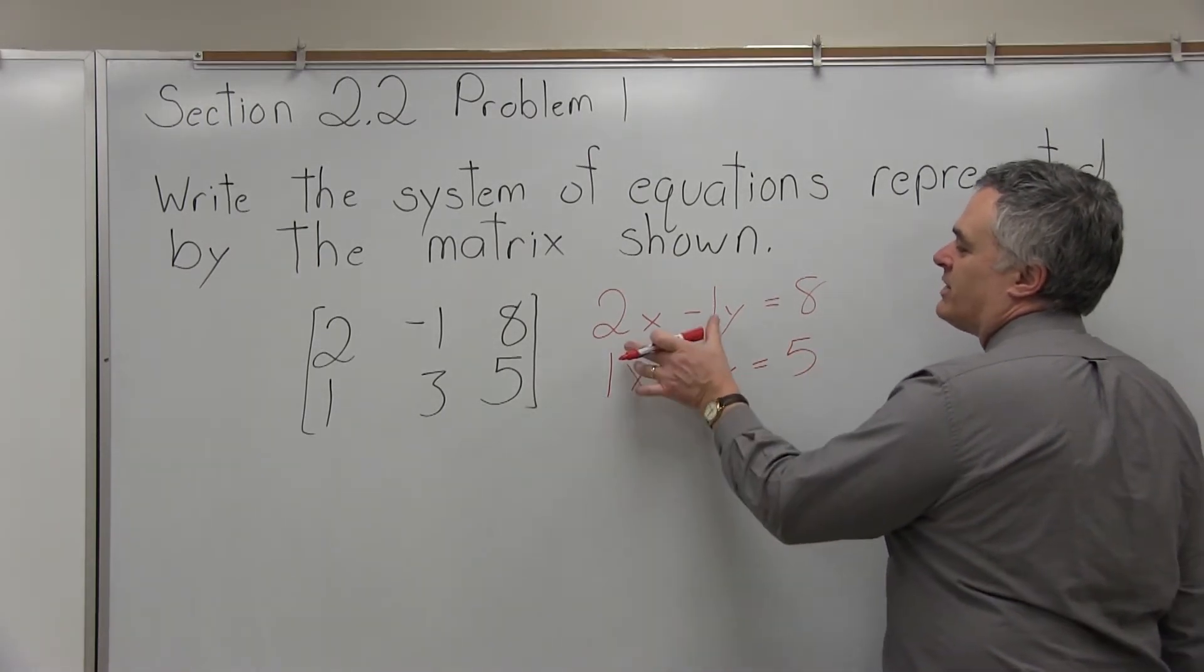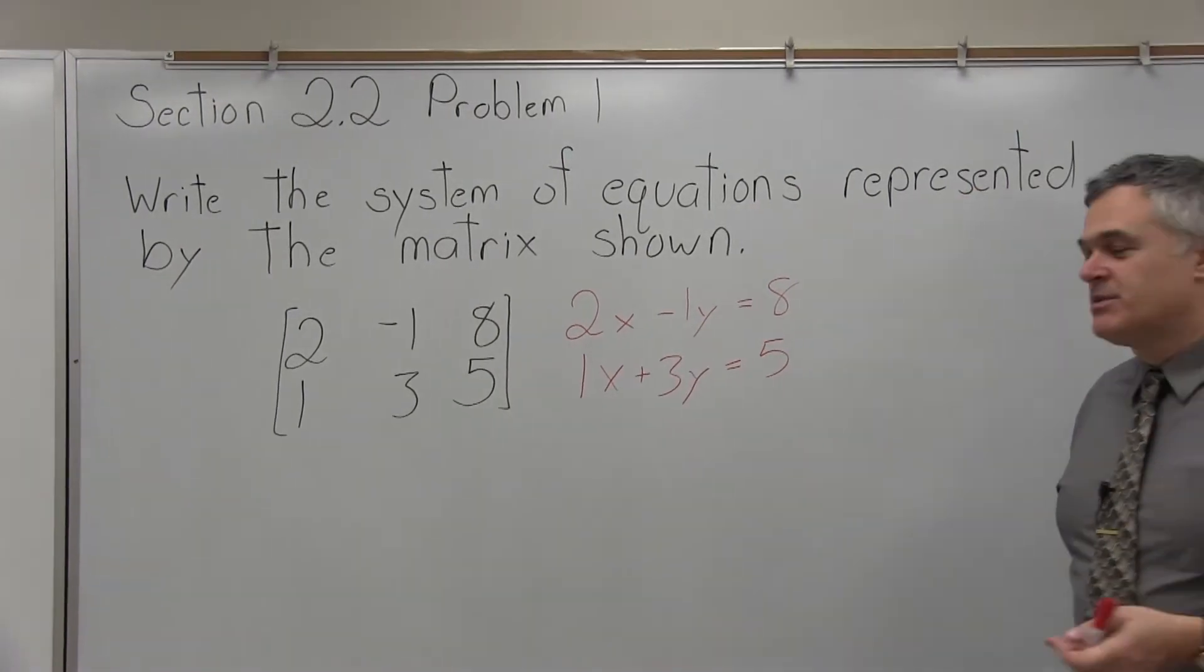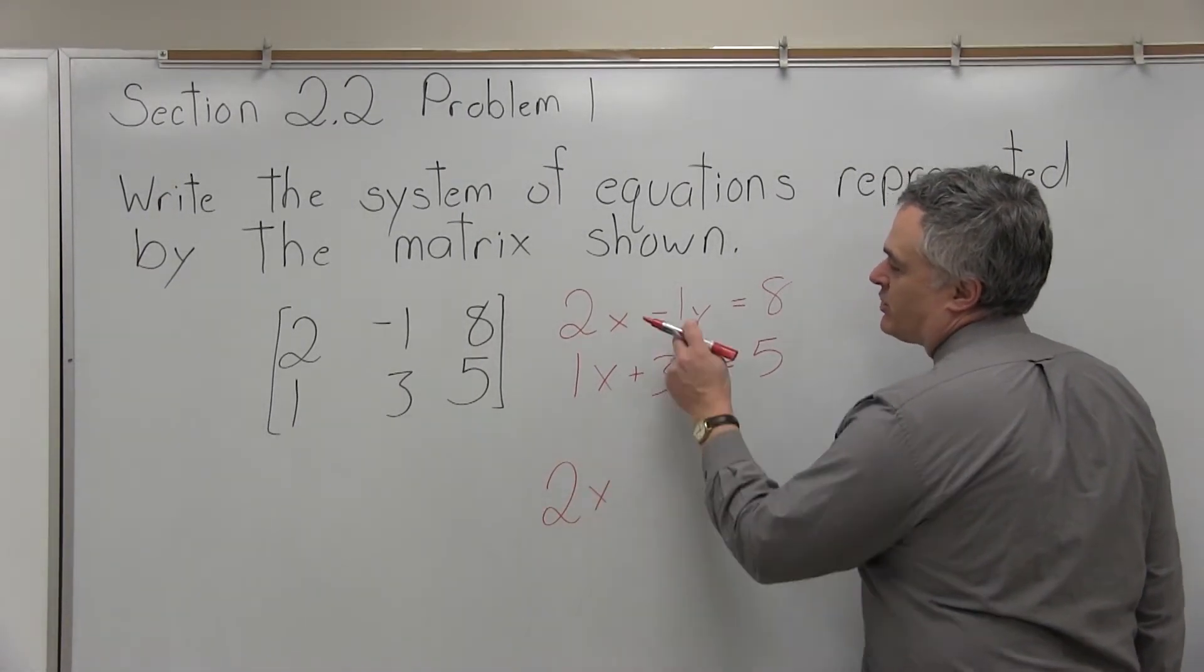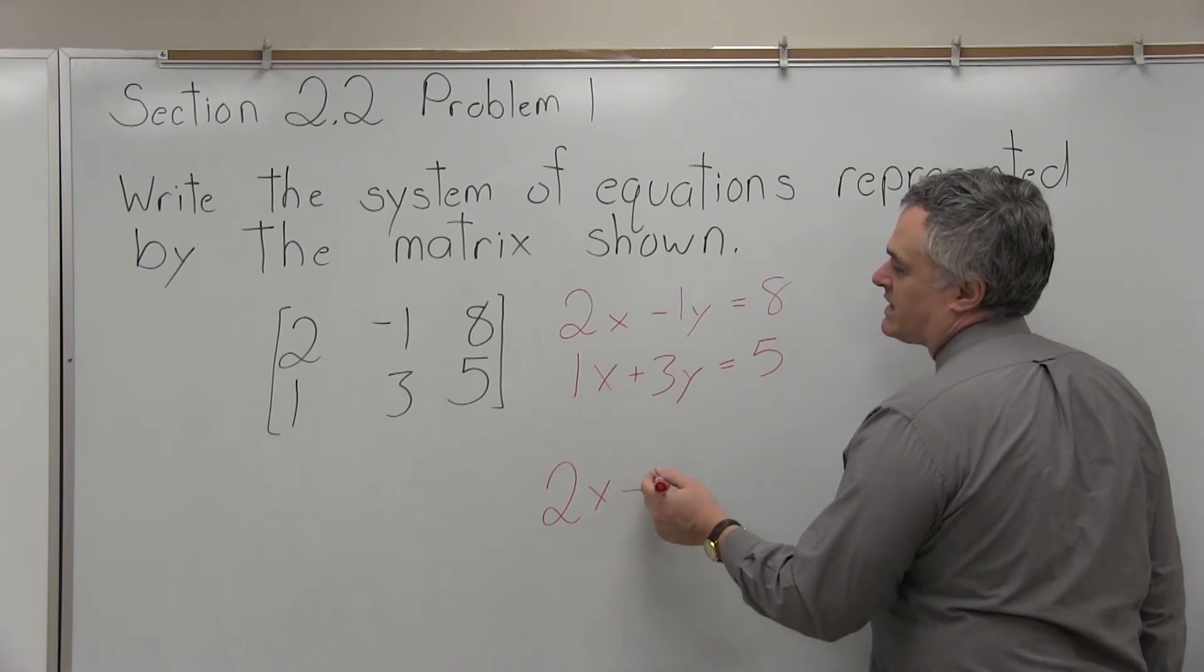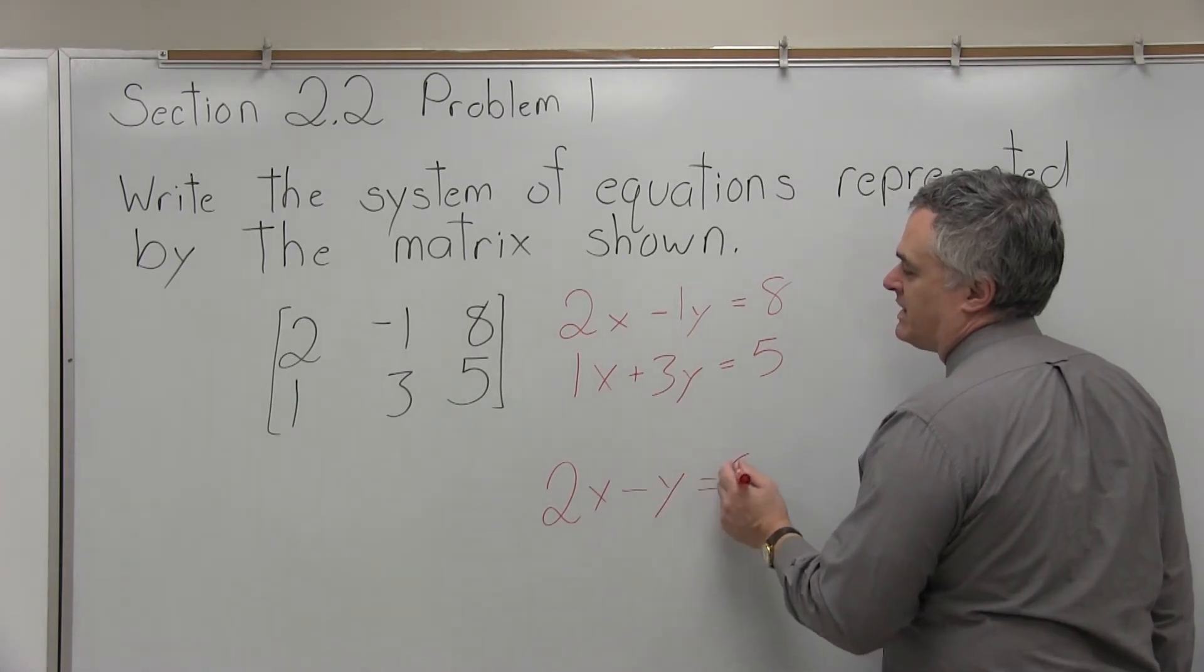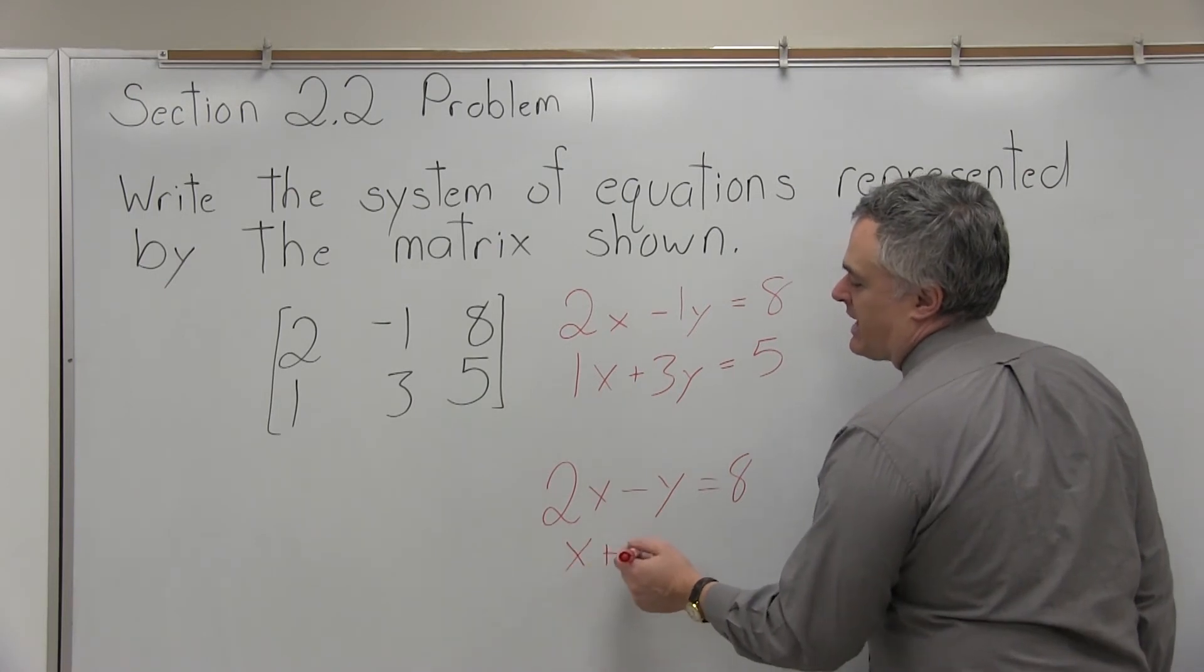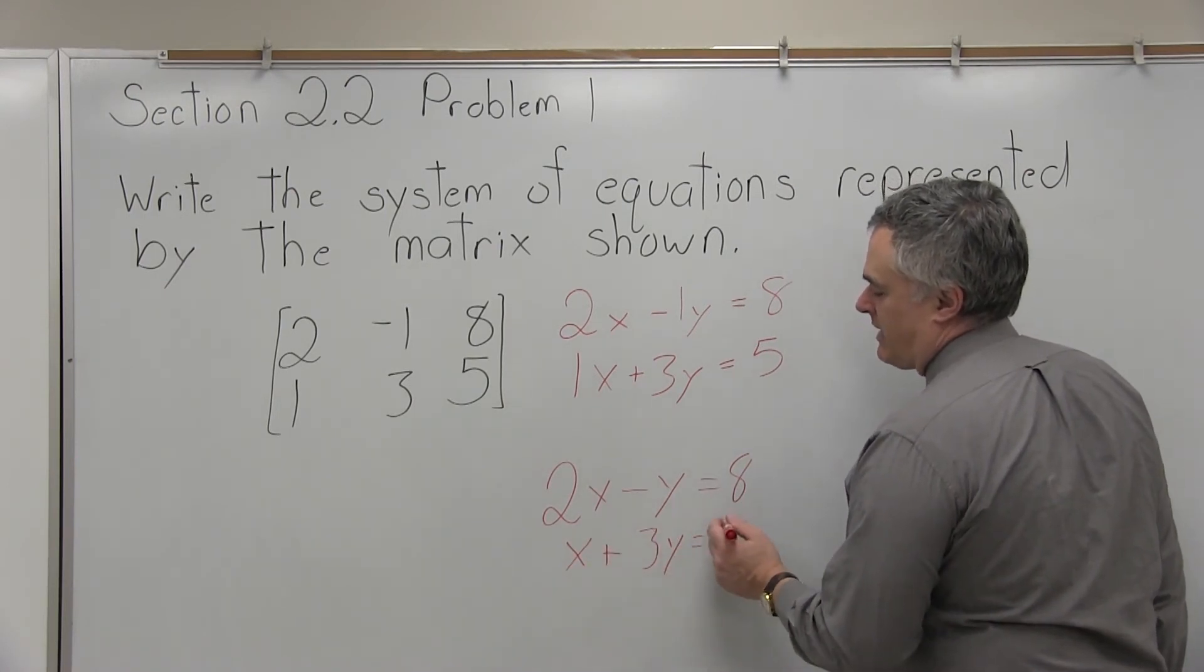Now the 1 in front of the variables, you can leave that if you want, that's perfectly fine. It is a little more traditional to not write the 1, so the top equation you could write as 2x minus y equals 8. And the bottom equation can be more traditionally written as x plus 3y equals 5.